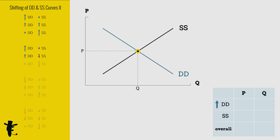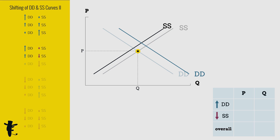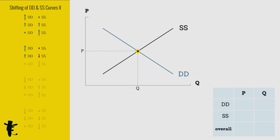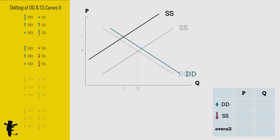When demand increases and supply decreases equally, price increases and there is no change in quantity. When the increase in demand is small and the decrease in supply is huge, price increases and quantity decreases.